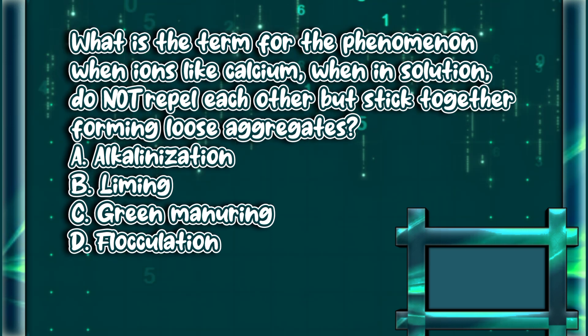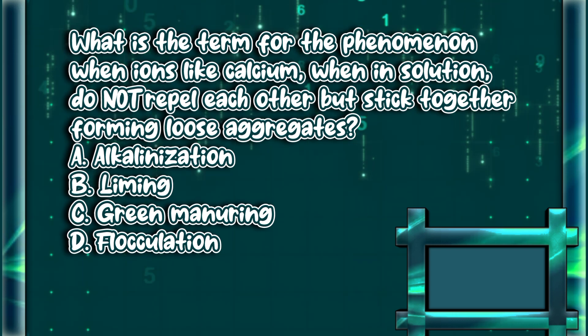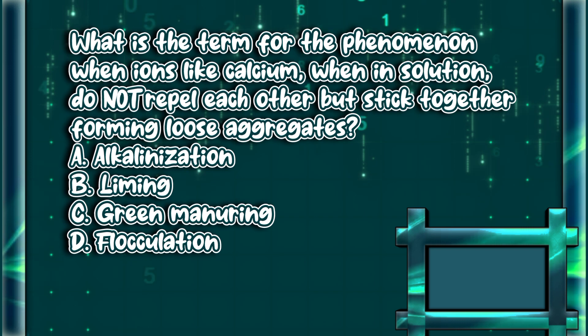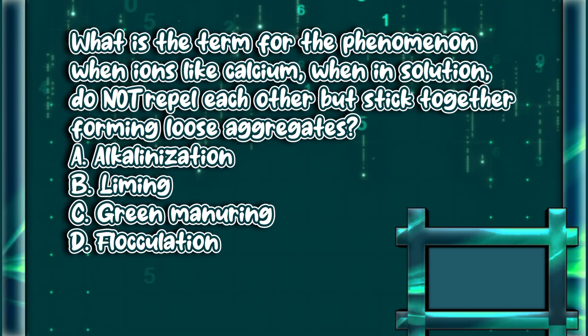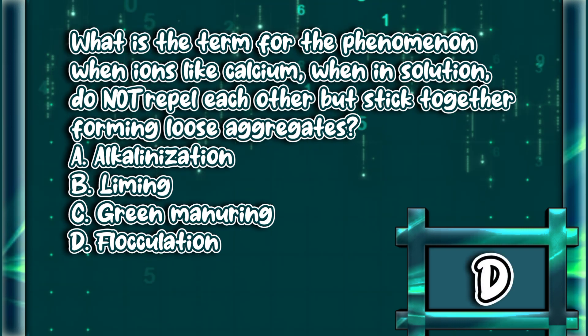What is the term for the phenomenon when ions like calcium, when in solution, do not repel each other but stick together forming loose aggregates? A) alkalinization, B) liming, C) green manuring, D) flocculation. The answer is letter D.